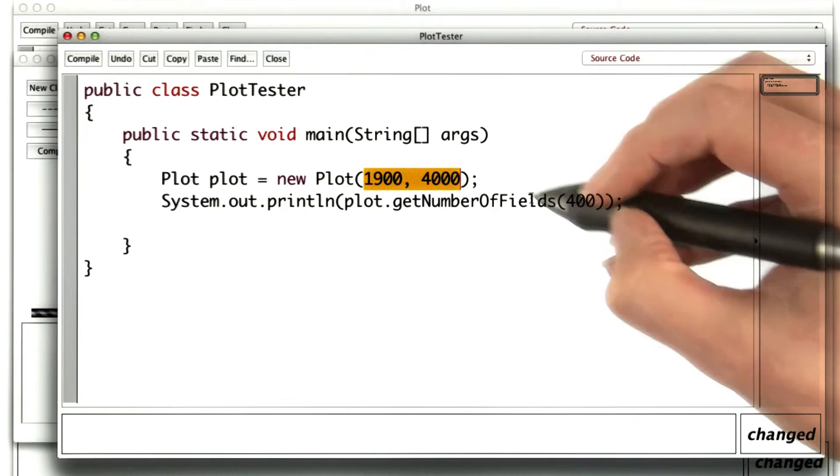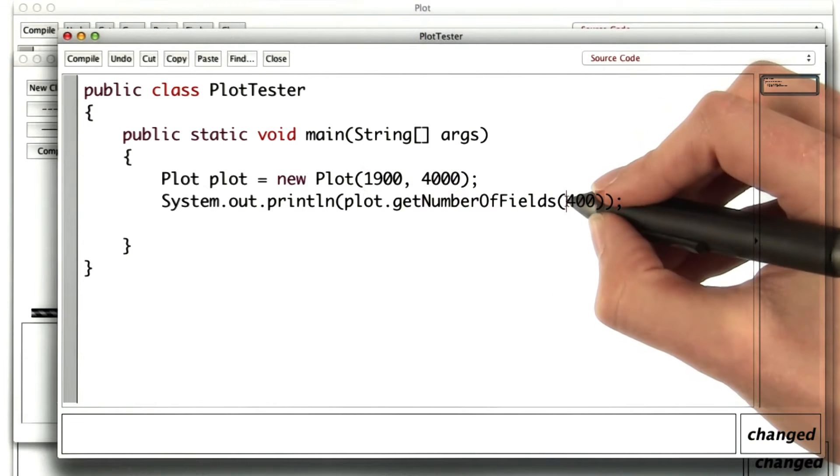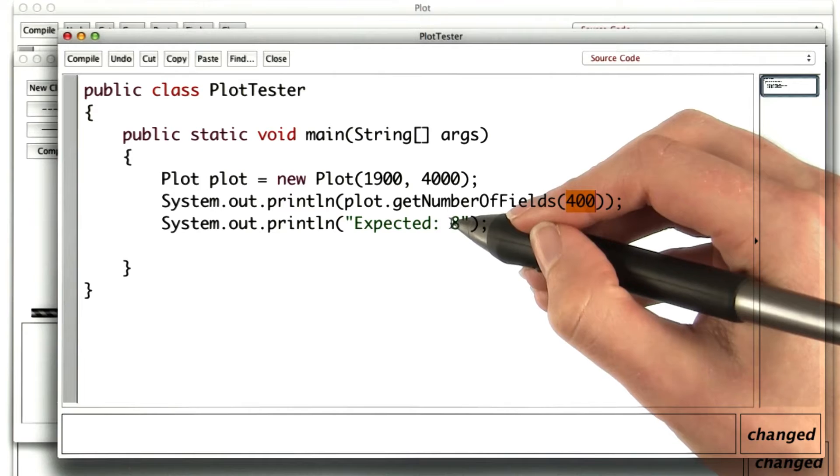And then I'll print out the actual, which should be the number of fields if the radius is 400. And then I'll print out the expected number that we calculated, which was 8.